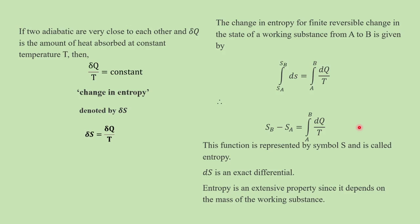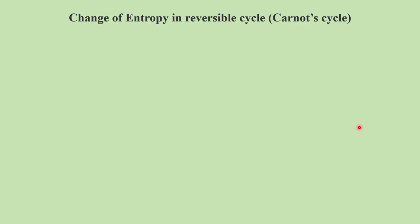Now we will find the entropy changes in irreversible and reversible processes. First, let us find the change of entropy in the reversible cycle — that is, the Carnot cycle. Let us find the expression for the change of entropy in a reversible cycle. For example, the Carnot cycle is a reversible cycle.